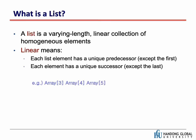First of all, what is a list? A list is a varying-length, linear collection of homogeneous elements. An array is a good example of a list. We talked about the difference between arrays and structures: an array includes lots of homogeneous elements, whereas in a structure the elements can be heterogeneous — some different data types.